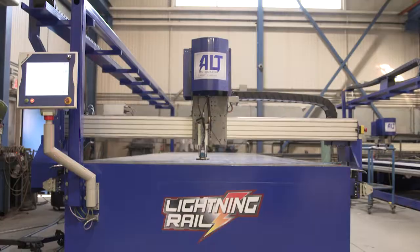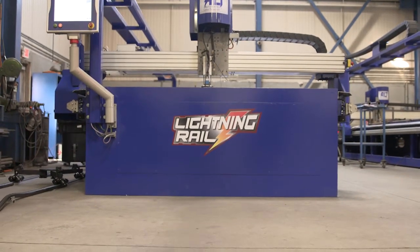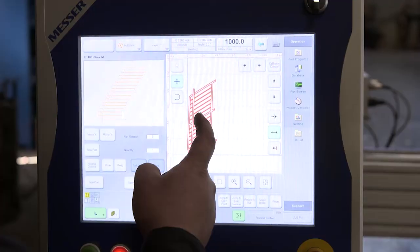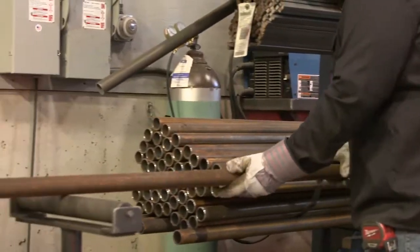Forget about the countless hours spent with tape measures, squares, and soapstone. Production time is cut by more than 50%. Fabricators load their drawing to the controller and just press print, then start gathering their materials for the project while the layout is happening.